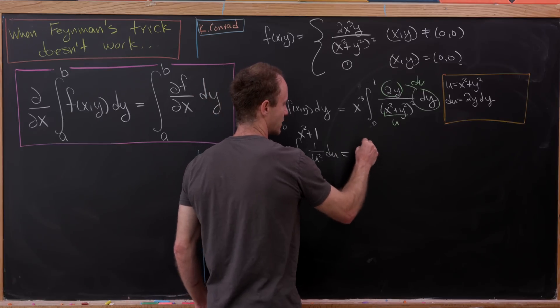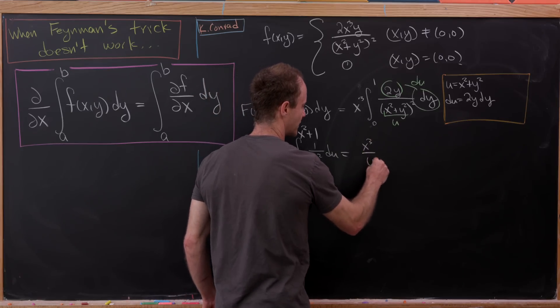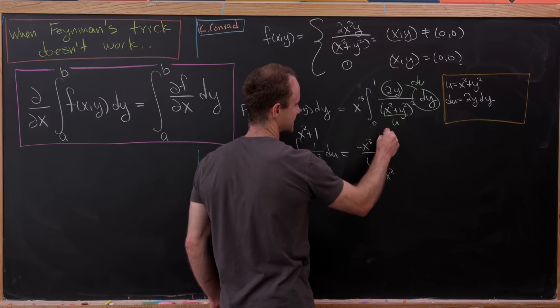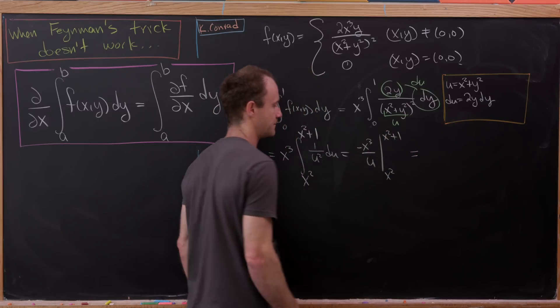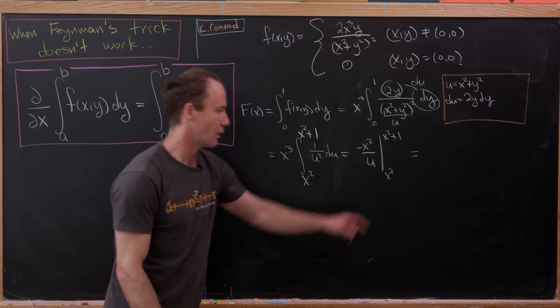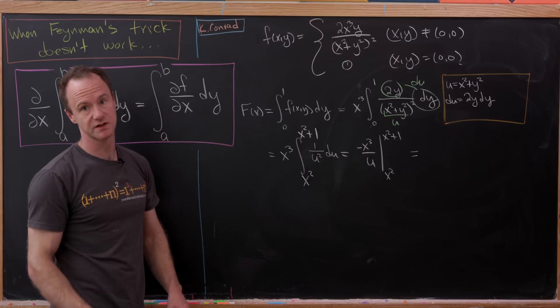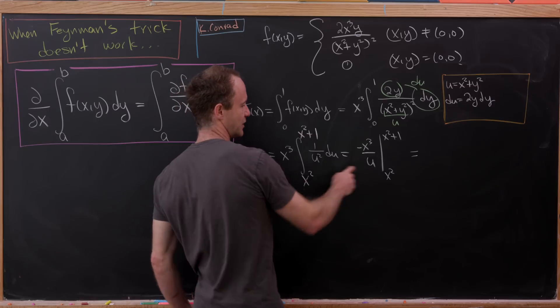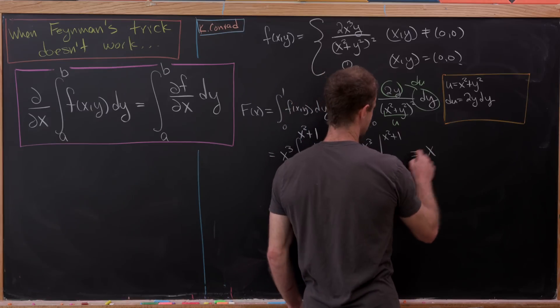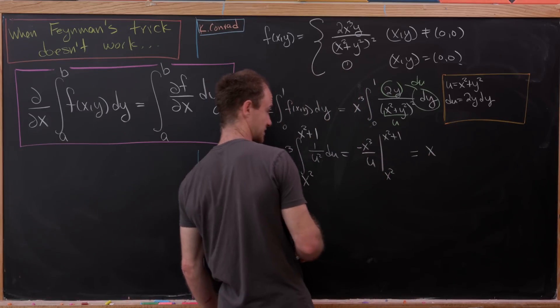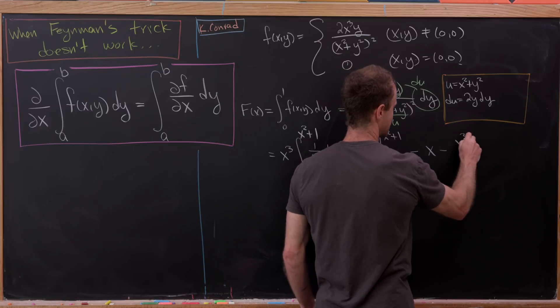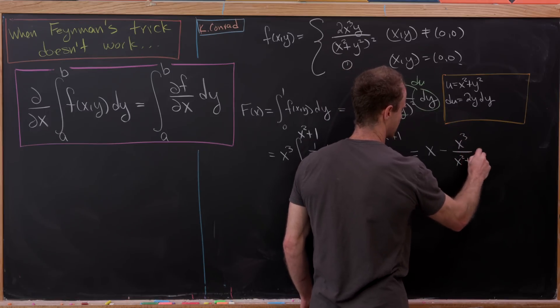Taking the antiderivative, we'll have x cubed over u, that'll be attached to a minus sign, evaluated from x squared up to x squared plus 1. Let's put in the lower bound of integration first and just get rid of the minus sign. So putting that lower bound in first, we'll have x because it's x cubed over x squared.